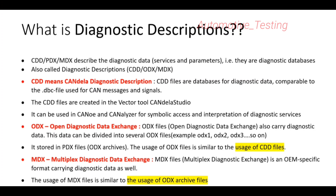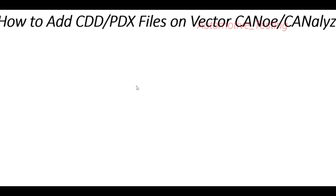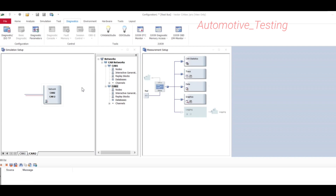Now we've seen what CDD, ODX, and MDX files are. Next, let's look at how we can add those files in Vector CANoe or CANalyzer. To add the CDD or PDX files, first go to Diagnostic, then select Diagnostic ISO TP.